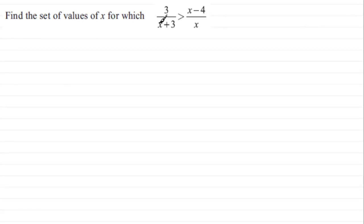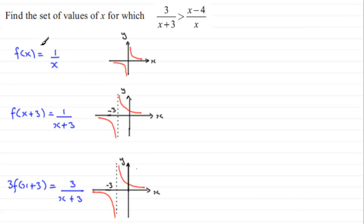So we're going to use the graphical method then to do this. And to do the graphical method we've got to look at sketching the graph of y = 3/(x+3) and then y = (x-4)/x. Now to sketch y = 3/(x+3) what I do is break this down using transformations of graphs something like this. I look at the graph of f(x) = 1/x our standard reciprocal graph.